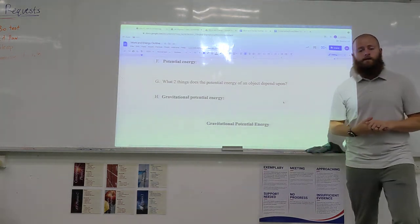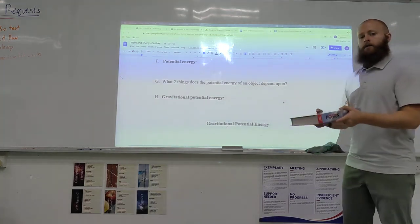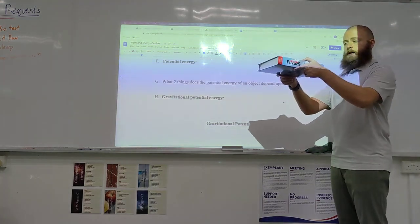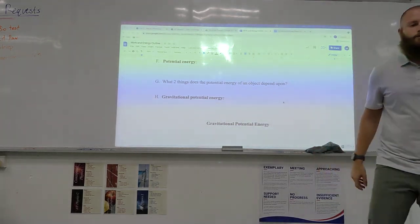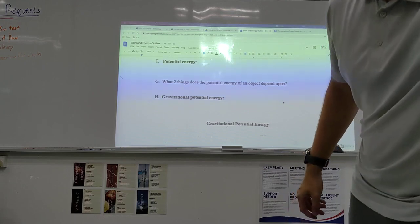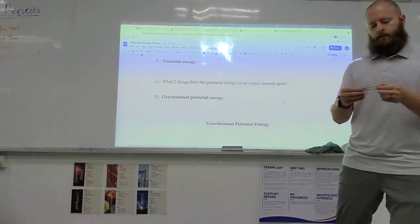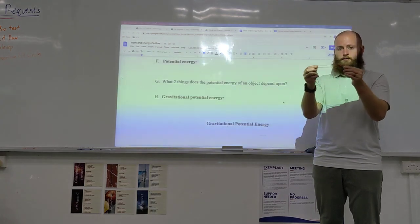One is from gravity. For example, if I have a book, if I hold a book up like this, it has the potential to fall, right? So it has the potential to cause the book to move. The other type of potential energy that we'll be talking about is spring potential. If I have a rubber band, if I hold it, it also has the potential to move.